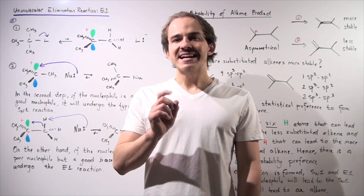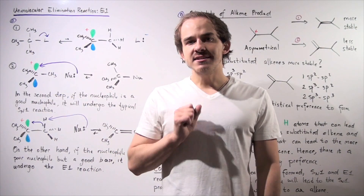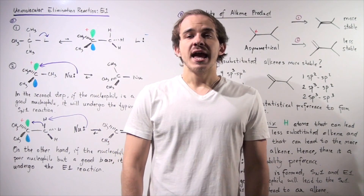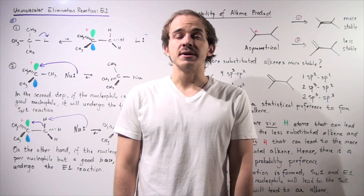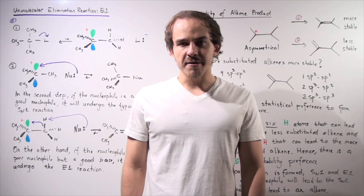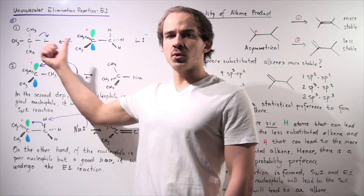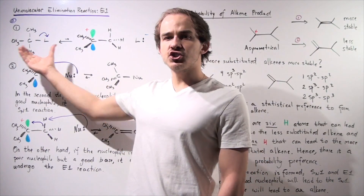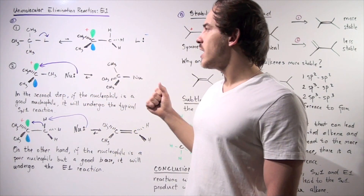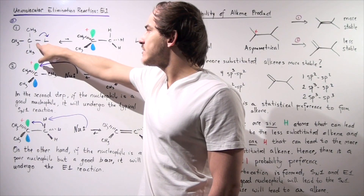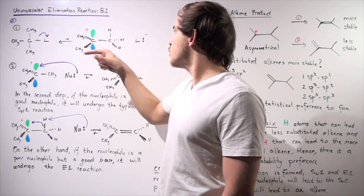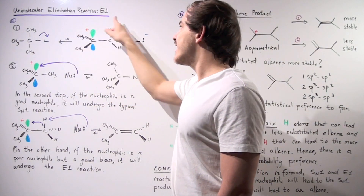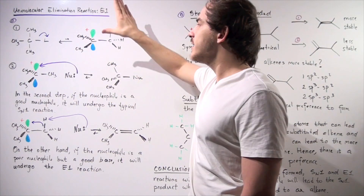Let's recall what an SN1 reaction is. An SN1 reaction is a two-step reaction in which the first step is the ionization step — the slow, rate-determining step. In this step we have a substrate; for this case we have a tertiary substrate that dissociates into two products. This pair of electrons breaks off the bond, going to the leaving group and forming an anion, as well as a cation — our carbocation intermediate.